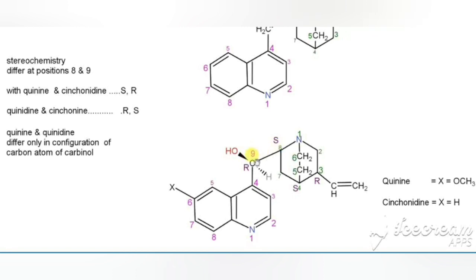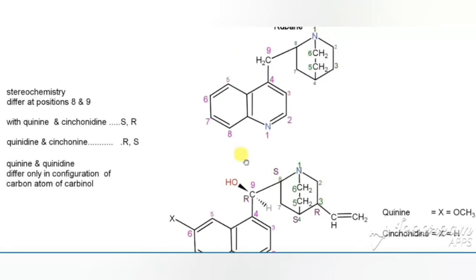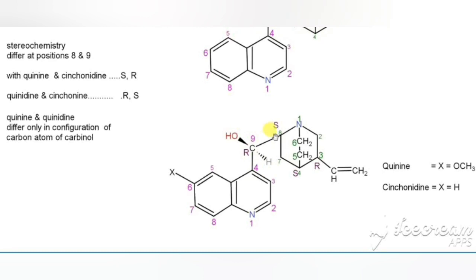For quinine: position eight is S configuration and position nine is R configuration. The hydroxy group at C9 is attached in beta configuration, and the hydrogen at C8 is in alpha configuration.